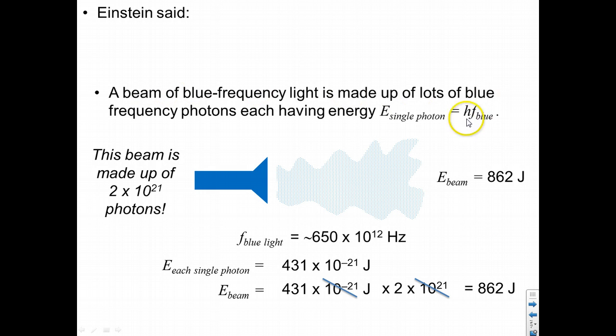So a beam of blue frequency light is made up of lots of blue frequency photons. And each photon has an energy equal to h times the frequency of the blue light. That's what Einstein said.